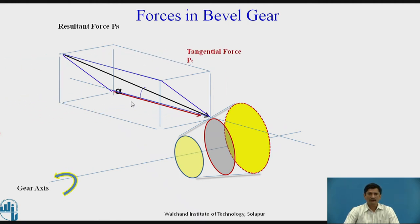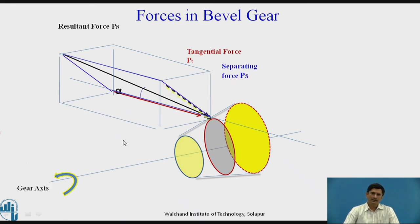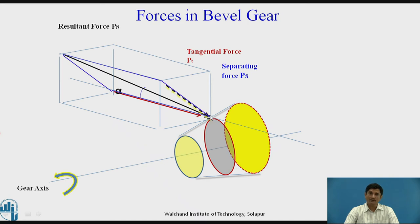We can resolve this force and get the first component, which is the tangential force Pt. Pt must be opposite to the direction of rotation as per convention. Resolving the remaining force into two components — one horizontal, one vertical — gives the separating force Ps in the blue plane. This force is neither purely vertical nor purely horizontal, so we need to resolve it further into two possible components.